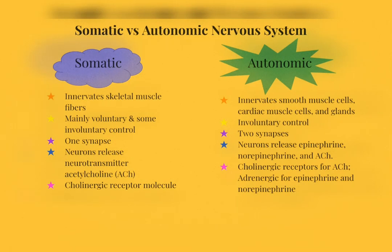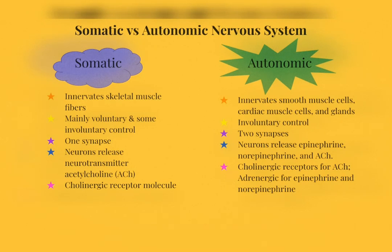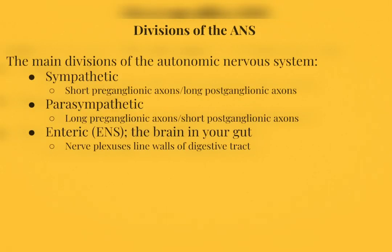Somatic neurons release acetylcholine as their neurotransmitter, with cholinergic receptors to respond. Autonomic neurons release epinephrine, norepinephrine, and acetylcholine as their neurotransmitters. The receptors used depend on the type of neurotransmitter released: cholinergic receptors respond to acetylcholine, while adrenergic receptors respond to epinephrine and norepinephrine. Epinephrine is another word for adrenaline, and norepinephrine is another word for noradrenaline, which explains why adrenergic receptors are used for these neurotransmitters.